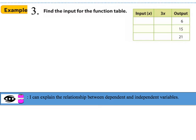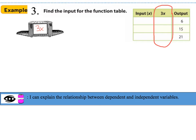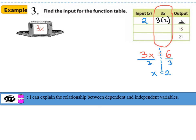For example 3, we need to find the input for the function table. In this problem, we're going backwards — instead of being given the input, we're now given the output. The relationship given in the box is 3 times x. So I can write 3x equals my output. I can draw my fulcrum down the equal sign and divide both sides by 3 to keep the equation balanced. With output 6: x equals 2, so the input is 2. Checking: 3 times 2 gives an output of 6. This output depended on this input.